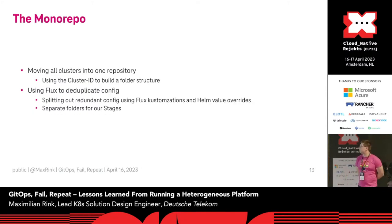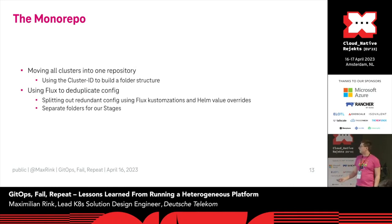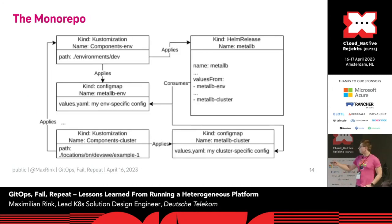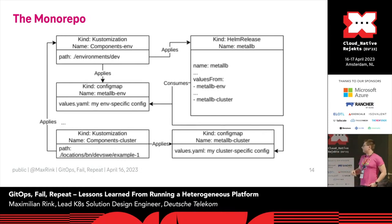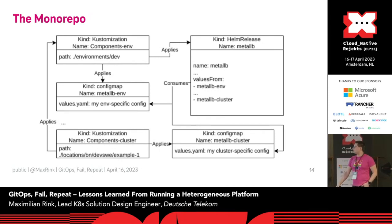After that, we started to move everything into one repository. We used the cluster ID to build a folder structure so every cluster now has its own dedicated folder. We split out duplicated config into different trees — one tree for the development environment, one for each site — and merged them together using Helm value overrides. So we have a customization for each cluster at the bottom that contains the customizations applying everything else, plus a config map for cluster-specific configuration.